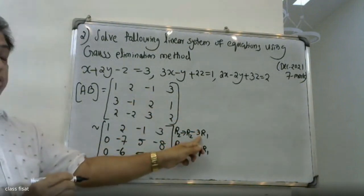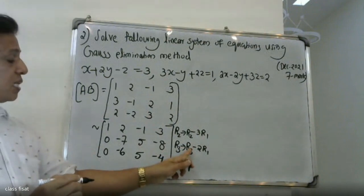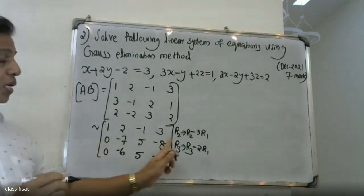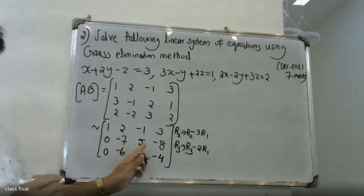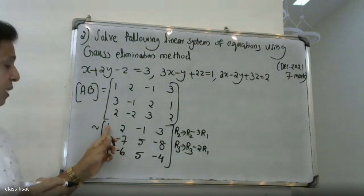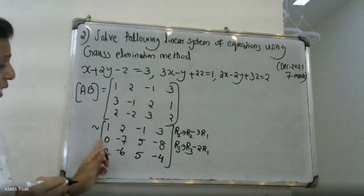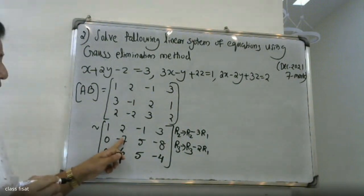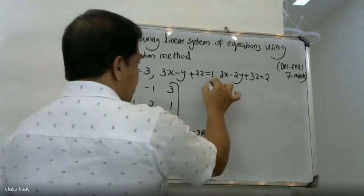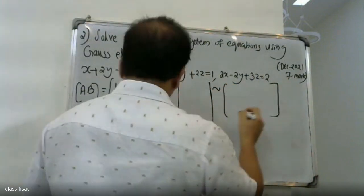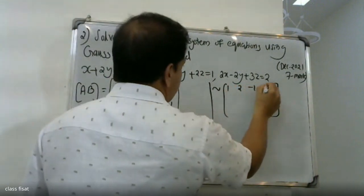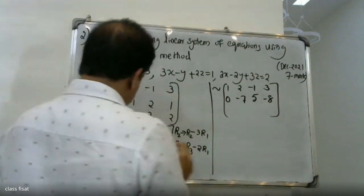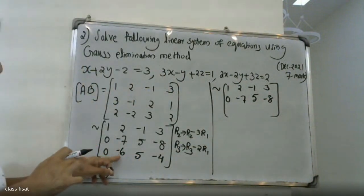Now, applying elementary row operations. First row is 1, 2, minus 1, 3. Second row is 0, minus 7, 5, minus 8. Third row is 0, minus 6, 5, minus 4. We will continue the procedure.